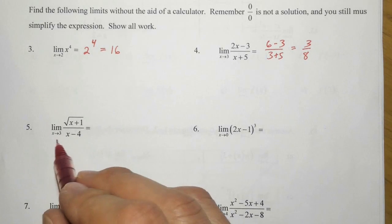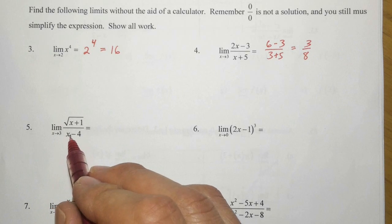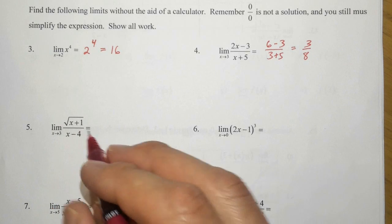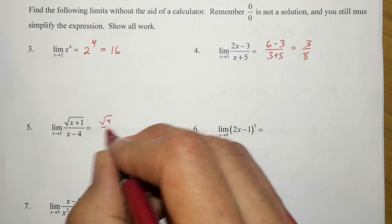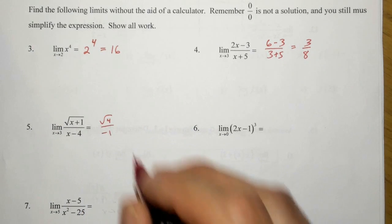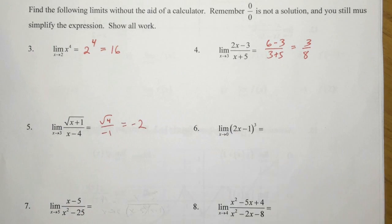With problem number five, the limit as x approaches three. In the numerator we have the square root of four, and in the denominator we have negative one, and that would simplify to negative two.